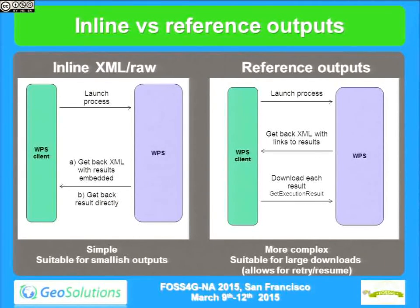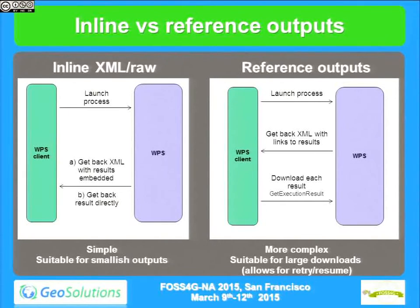The client has the liberty to choose three different models for getting results. It can say: I'm submitting this request and I just want the GML as raw GML, or a shapefile as a raw shapefile — submit the synchronous request and get back directly the data, no extra information involved. That's very nice for simple cases. Alternatively, I submit a request and want back an XML that describes the request I made and also contains the result.